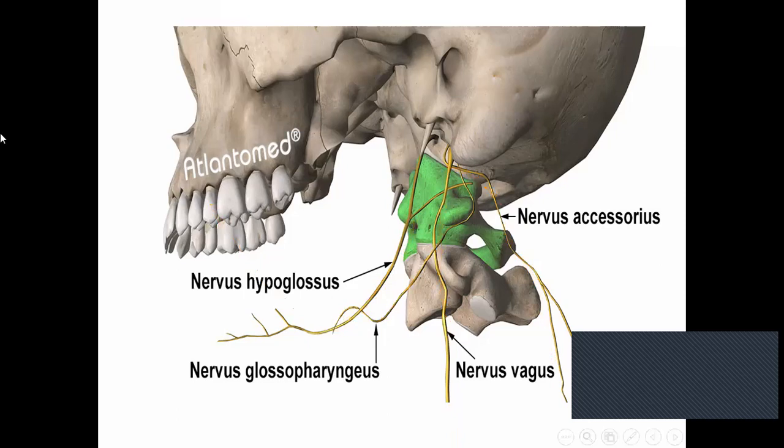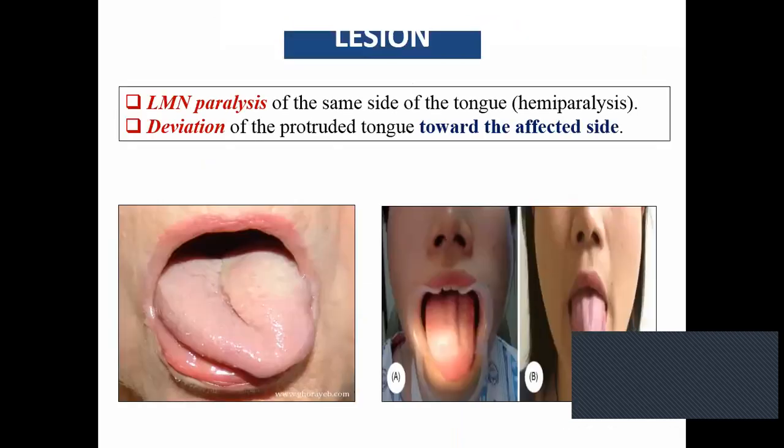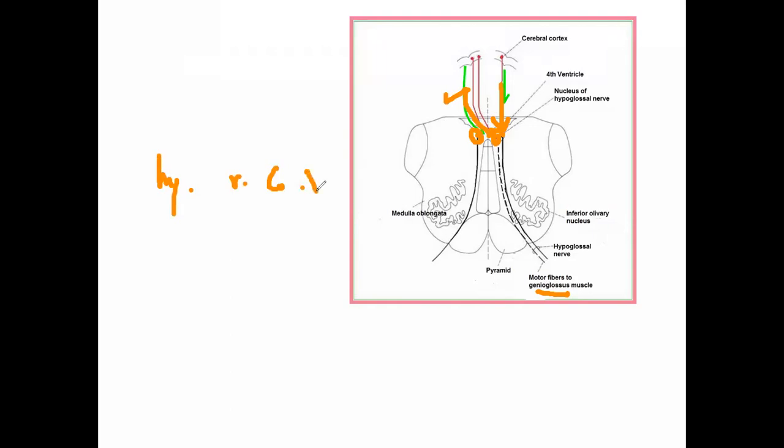Regarding the corticobulbar input to the hypoglossal: the hypoglossal nucleus receives cortical fibers from both sides. But the part controlling the genioglossus muscle receives input from the opposite side only — like the facial nerve. So lesion of the contralateral corticobulbar tract will affect the genioglossus. All cranial nerve nuclei receive bilateral corticobulbar tracts, except the lower facial nucleus and the genioglossus-controlling part of the hypoglossal nucleus.